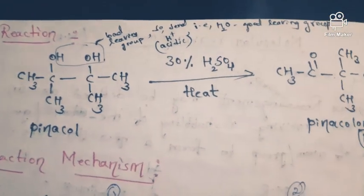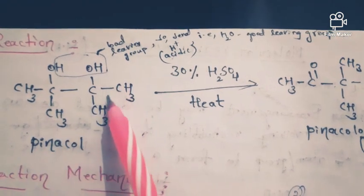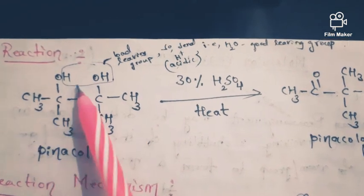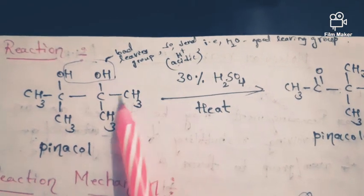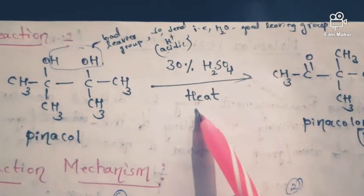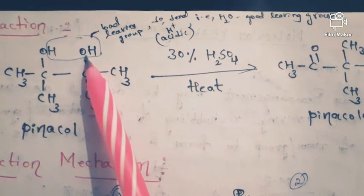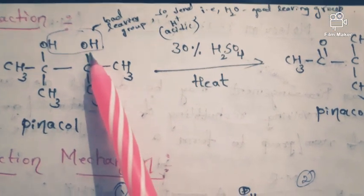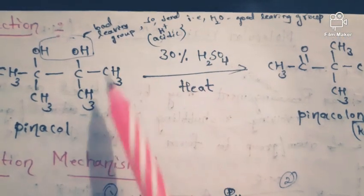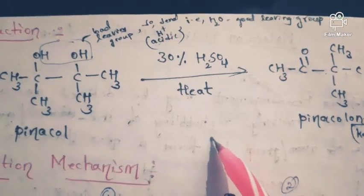This is the equation for the pinacol-pinacolone rearrangement. This is the pinacol — to each carbon, two methyl groups and one OH group are attached, making it a 1,2-diol. In acidic conditions, meaning 30% sulfuric acid with heat, the hydroxyl is a bad leaving group, so it is very difficult to leave. But when the hydroxyl is treated with acid, we get OH2+, and water acts as a very good leaving group.